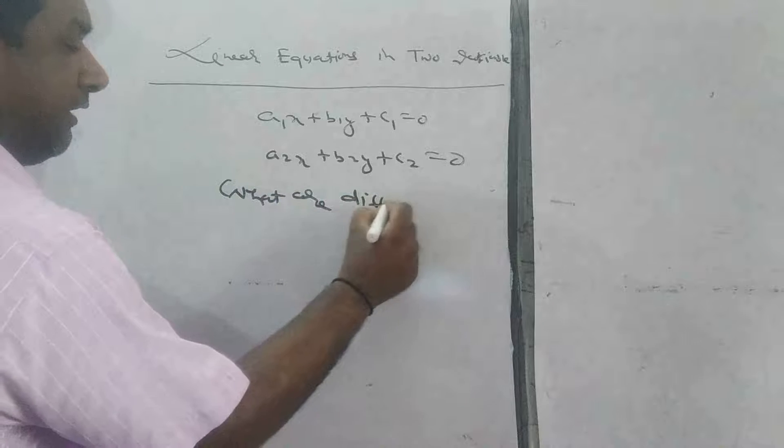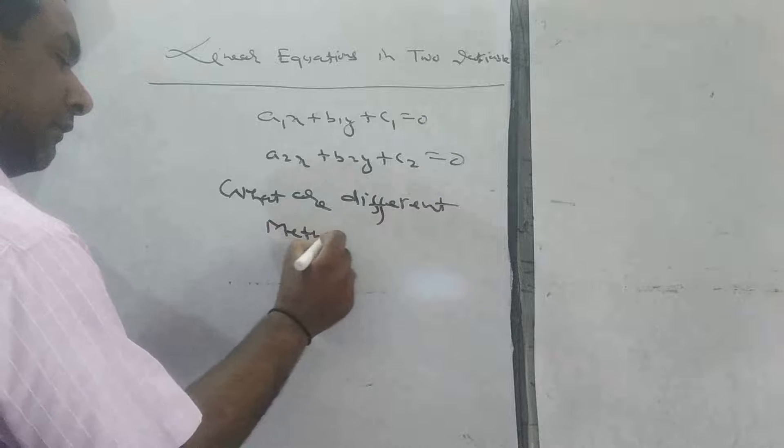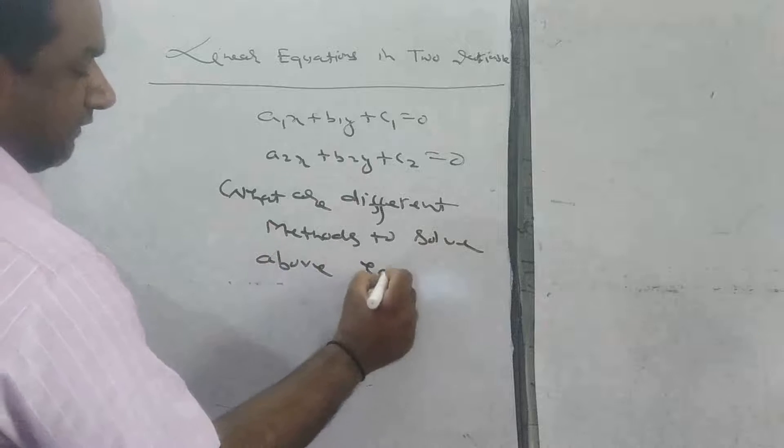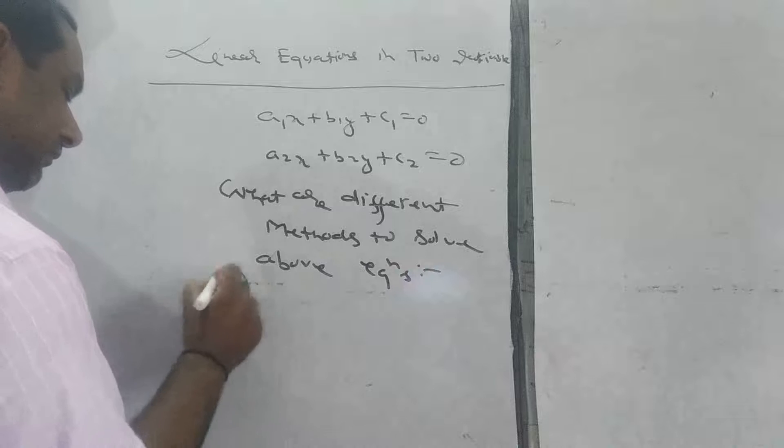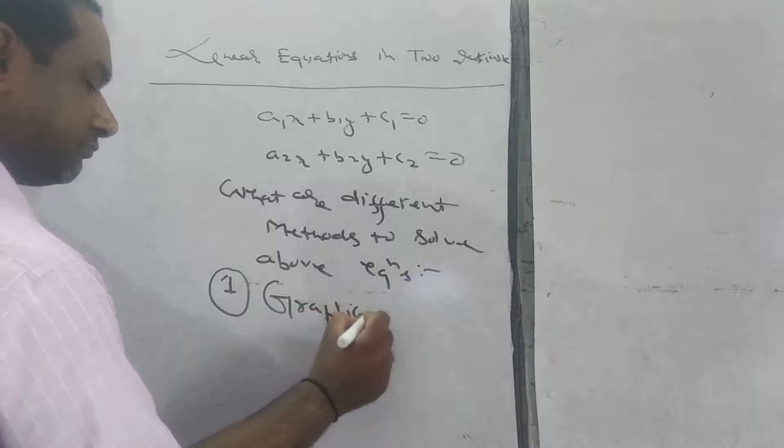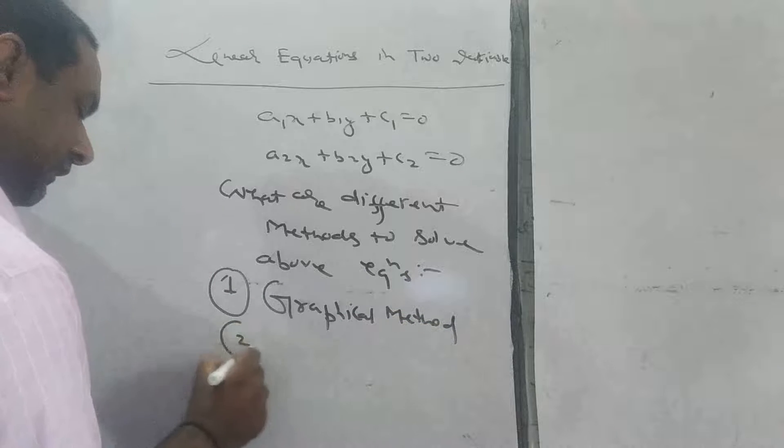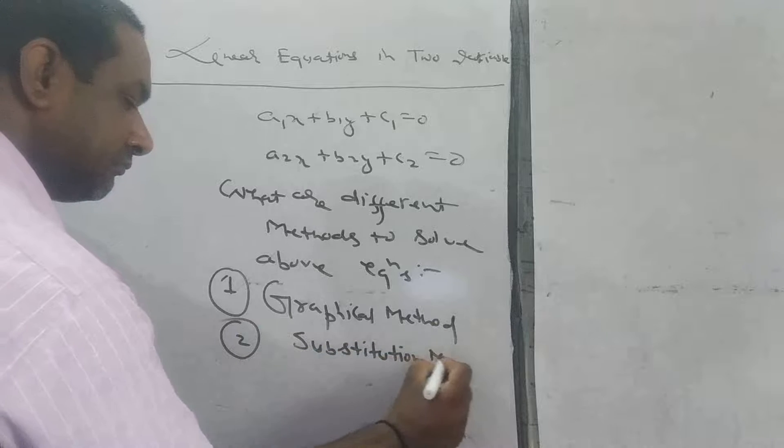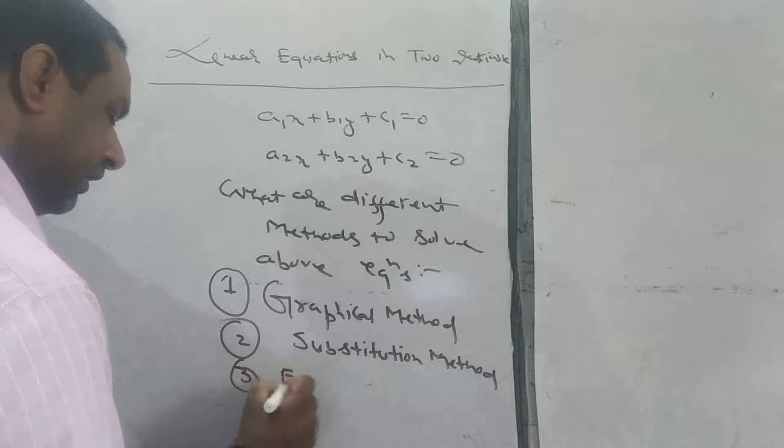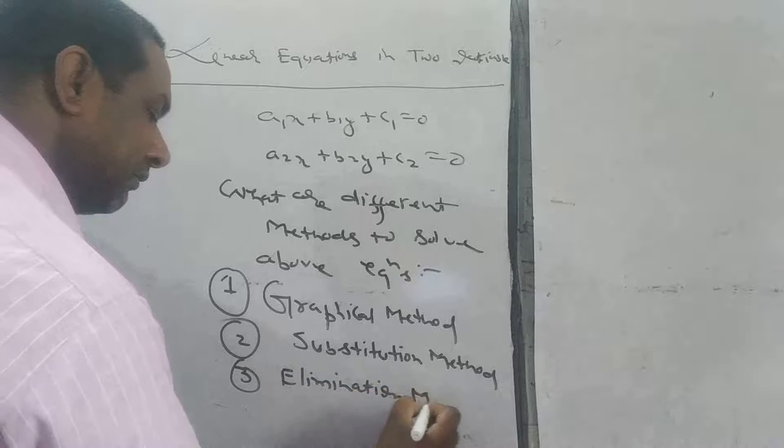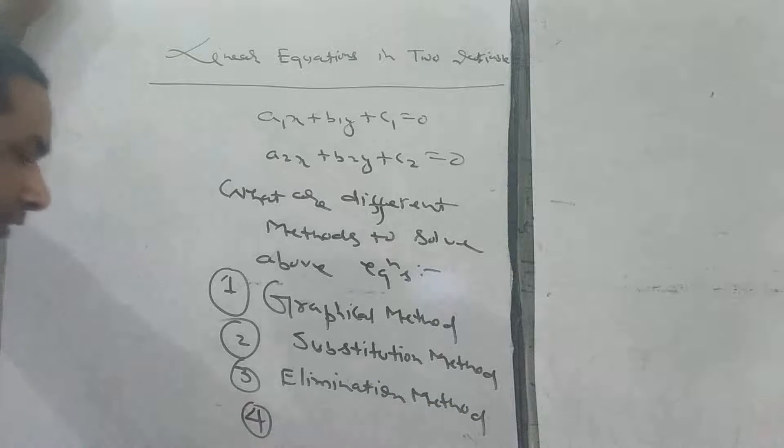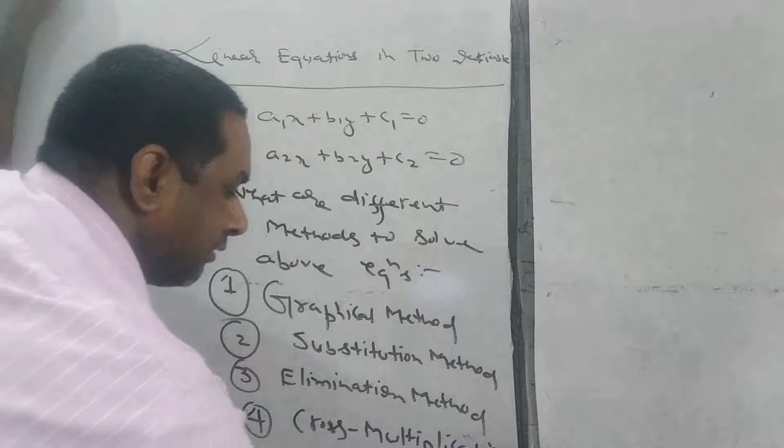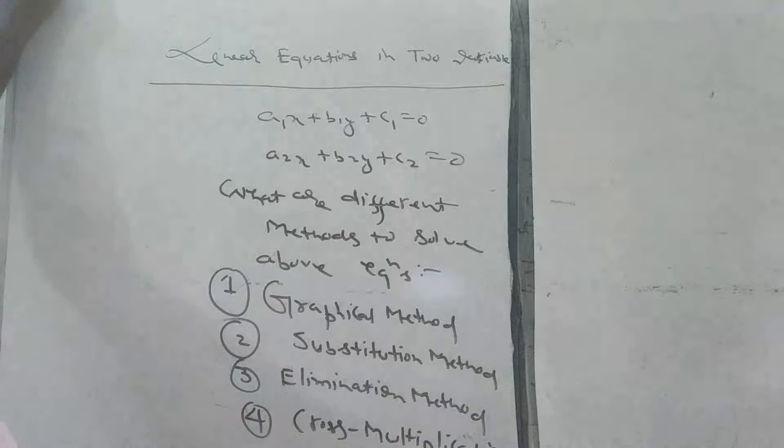What are different methods to solve above equations? The methods are: first graphical method, second substitution method, third elimination, fourth cross multiplication. So these are four prominent methods to solve linear equations in two variables.